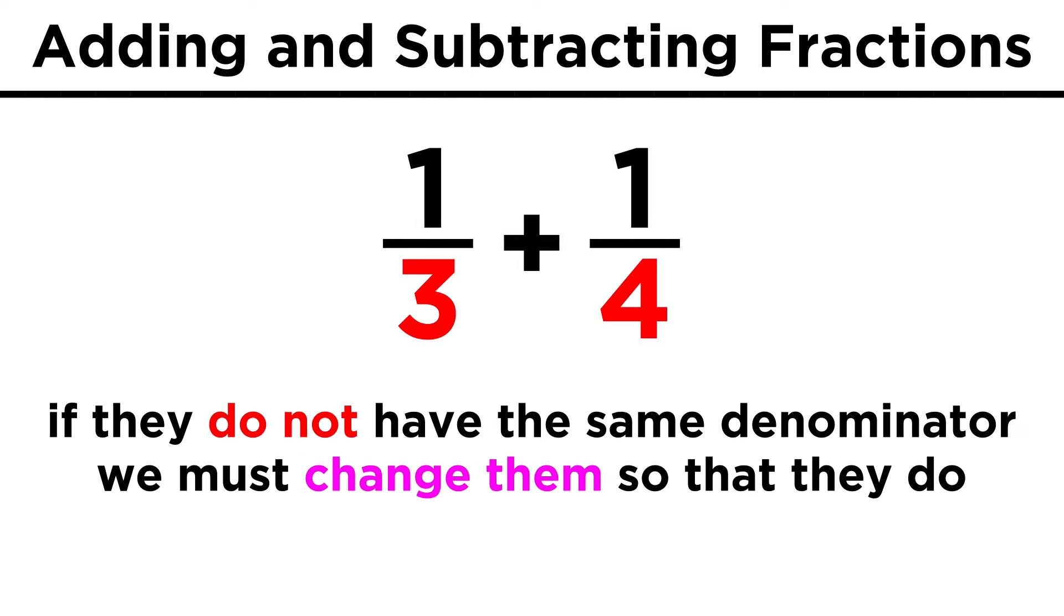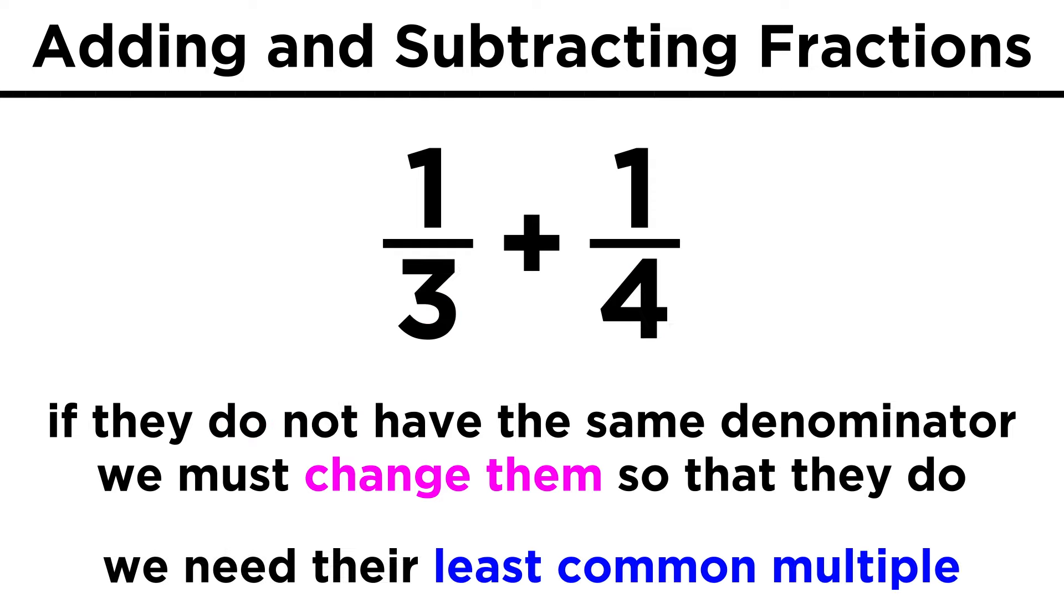What if the fractions do not have the same denominator? In that case, we have to change them so that they do have the same denominator. To do this, we have to find the least common multiple of the denominators.